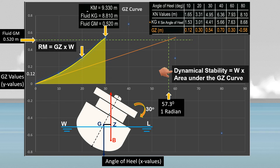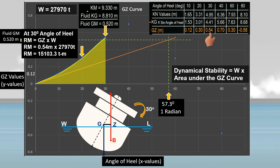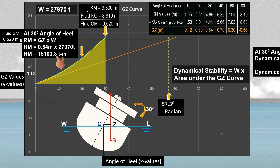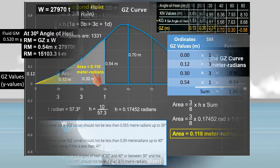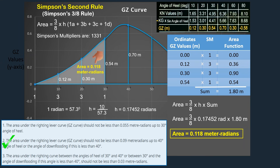Let's do some calculations. The ship's displacement at her loaded condition is 27,970 metric tons. At 30 degrees angle of heel, the ship's righting lever is 0.54 meter. Multiplying it by the ship's displacement, the moment of statical stability is 15,103.3 ton-meters. To determine the dynamical stability at 30 degrees, multiply the ship's displacement by the area under the GZ curve up to 30 degrees: the dynamical stability is 3,300.46 meter-tons. In a previous video, I showed how to calculate this area using Simpson's second rule — kindly check the link in the description below for full details.